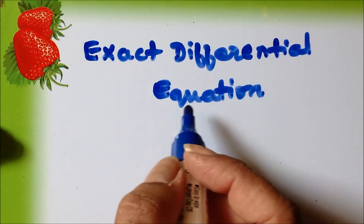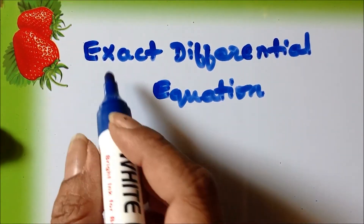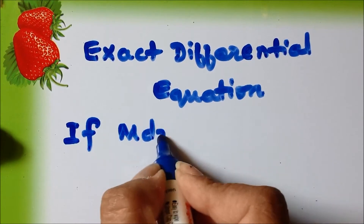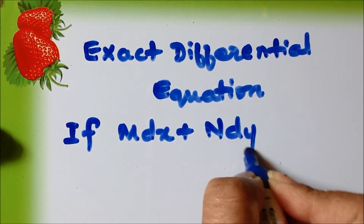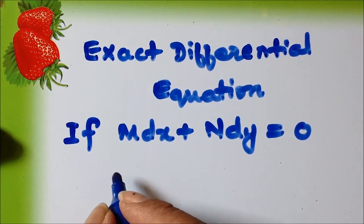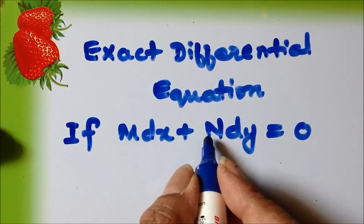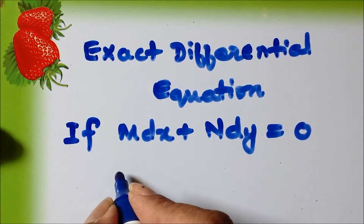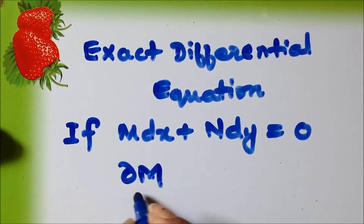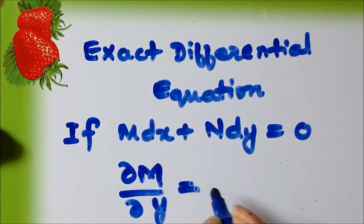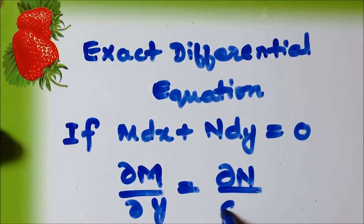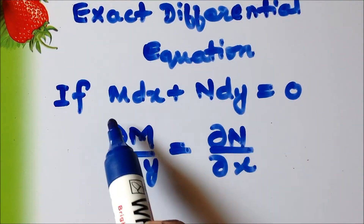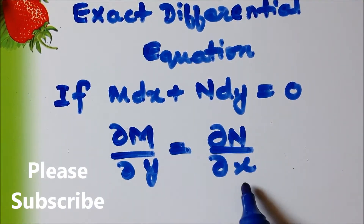Today's topic is going to be exact differential equations. So what is an exact differential equation? If m dx plus n dy is equal to 0 is the given equation, where m and n are functions of x and y or they may be constants, then if the condition dou m by dou y is equal to dou n by dou x is satisfied, then the given differential equation is said to be an exact differential equation.